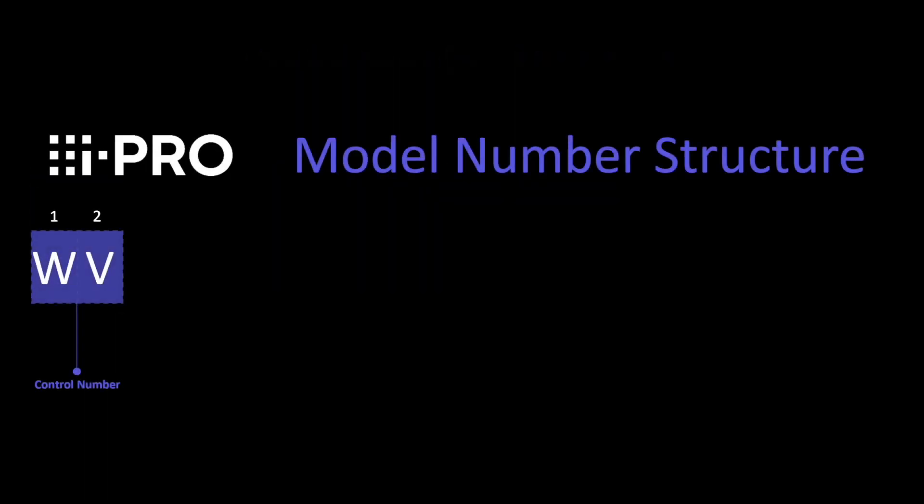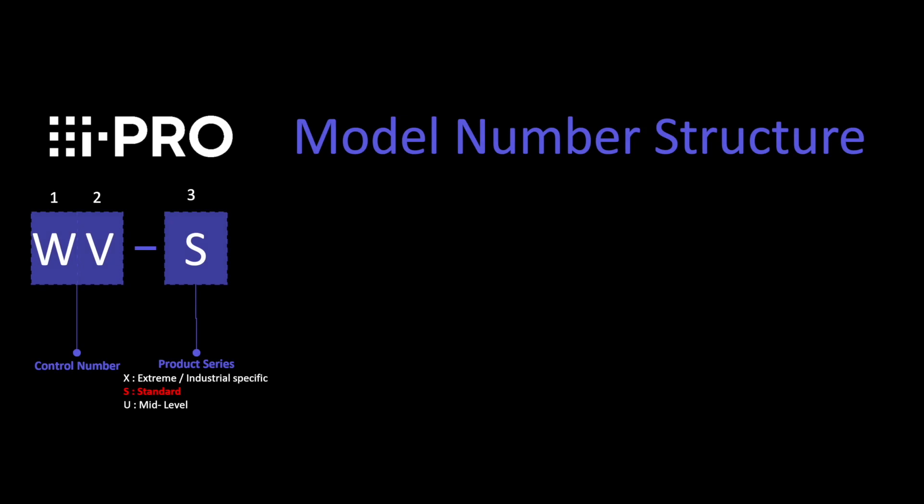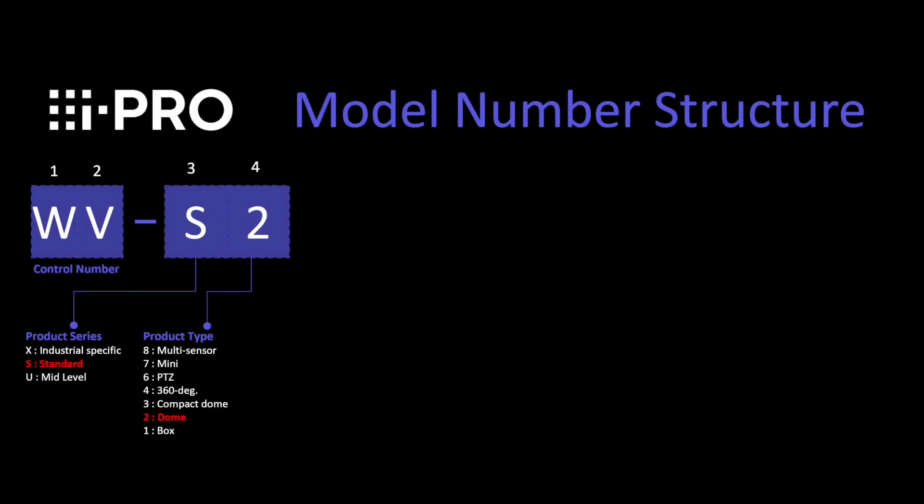Let's look at the new number structure. The first two characters are WV, a control number that recognizes iPro to any VMS that it integrates to, and it is found in front of all iPro cameras. The third character is the type of camera in the iPro model range of cameras. The fourth character is the product type or form factor.